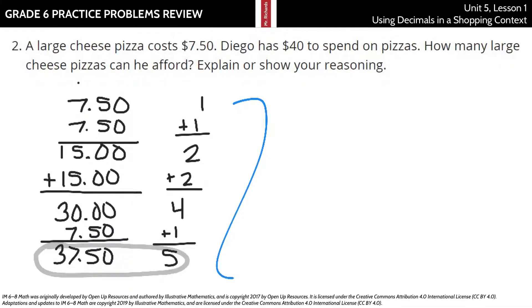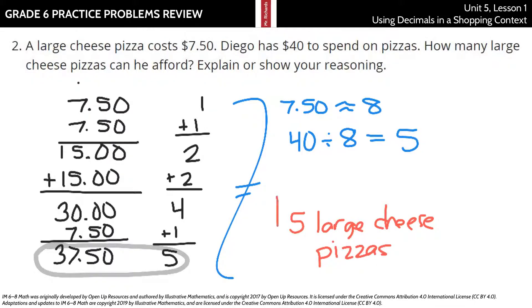Another way of doing it is to go, well, $7.50 is pretty close, kind of, to $8. And if I did $40 divided by the $8, that's going to be about five pizzas. And so that's another way of looking at this is just to estimate. But either way, you can get about five large cheese pizzas. And that is indeed making me hungry.